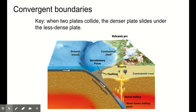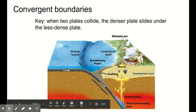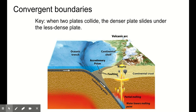The next type of plate boundary is our convergent plate boundary. This is definitely the most complex one because it depends heavily on what two types of plates are colliding. There's a key thing to remember here: when two plates are colliding, the denser plate slides under the less dense plate. Here we can see two plates colliding — this is clearly the denser plate because it's sliding under the less dense one. There's going to be a bunch of impacts from that, both literally and figuratively.